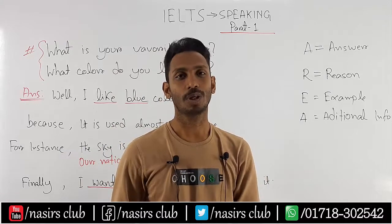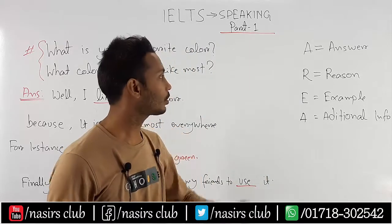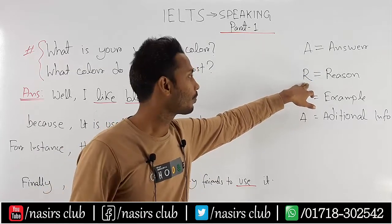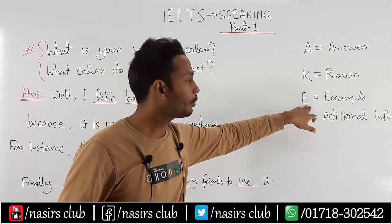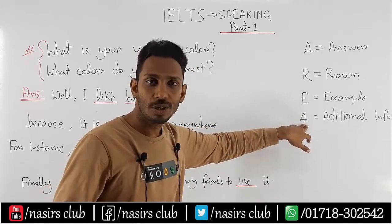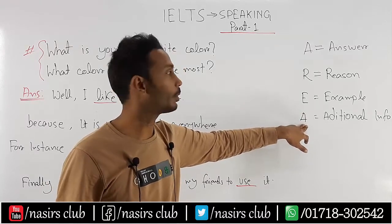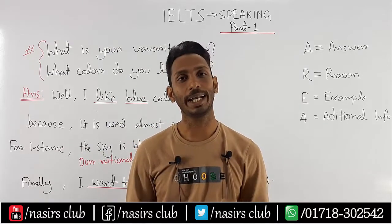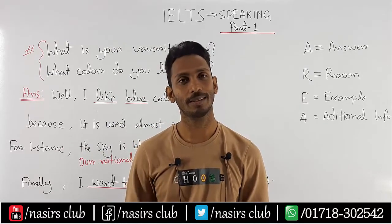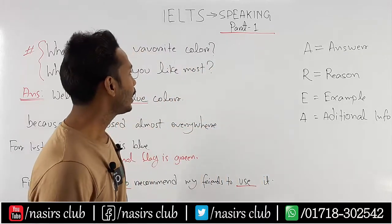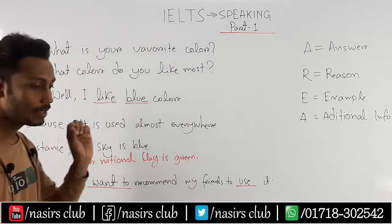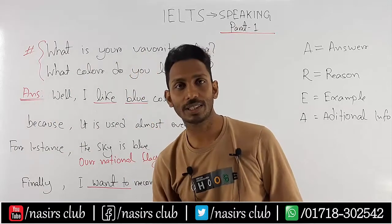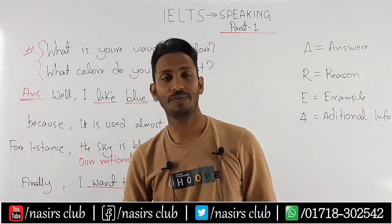Using the AREA method, we have to give an Answer, a Reason, an Example, and Additional information. This can help you target Band 7, 8, or 9. For example, in Part 1, the examiner might ask: 'What is your favourite colour?' or 'What colour do you like most?'